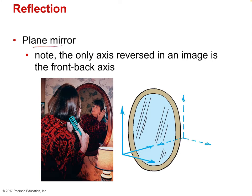Plane mirrors are the flat type. The only axis reversed in such an image is the front-back axis — the up-down and left-right axes are unchanged. This might be surprising because when you read something in a mirror, it looks like it's written backwards — it seems like the left-right axis is reversed. But that's just how your brain processes the information, because your brain is quite willing to switch the left-right direction to compensate for the forward-backward axis being flipped. It's an effect of the human brain processing information — there are lots of cases where what you see isn't what's happening, it's just what your brain is processing.